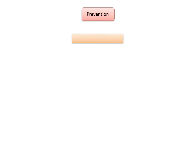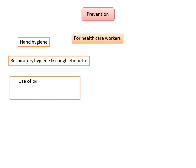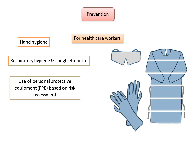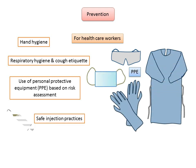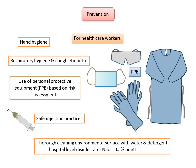For health care professionals, hand hygiene is essential: wash hands before touching a patient, before cleaning or an aseptic procedure, after body fluid exposure risk, after touching a patient, and after touching patient surroundings. Maintain respiratory hygiene — turn your head away from others when coughing or sneezing and cover your nose and mouth with a tissue. Use personal protective equipment (PPE) based on risk assessment. WHO recommends safe injection practices including a clean workplace, hand hygiene, sterile safety-engineered syringes, sterile vials of medication, skin cleaning and antiseptics, and appropriate sharps collection and waste management. Thorough cleaning of environmental surfaces with water and detergent, and applying hospital-level disinfectants such as sodium hypochlorite 0.5% or ethanol 70%, are also effective.